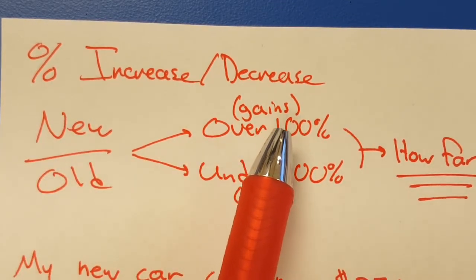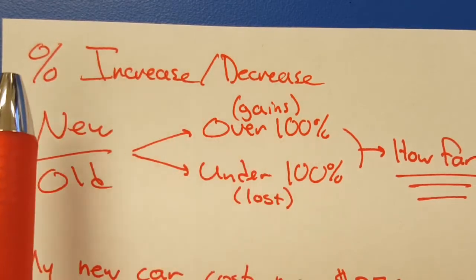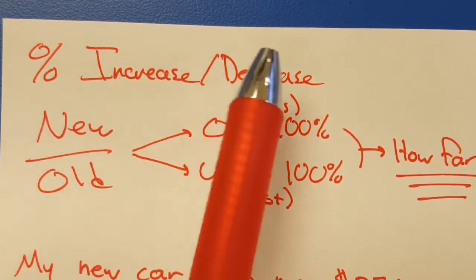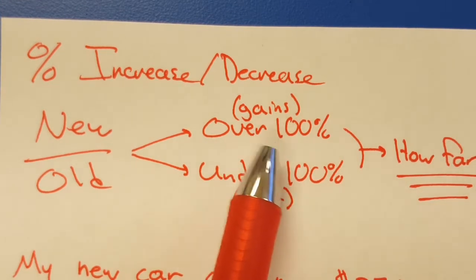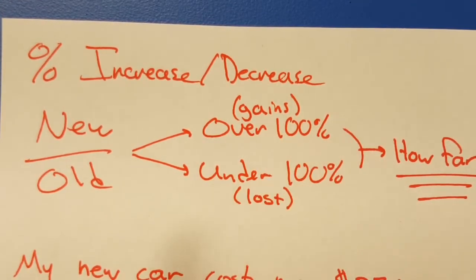So mental math right away, move the decimal over two places and you'll be good to go because we're talking about percent increase and decrease. If you can think about the decimal really quick as a percent, slide it over two places and you'll be all right.